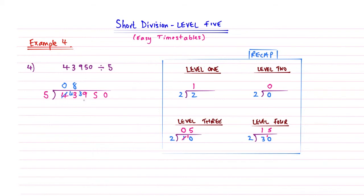Now 5s into 39. Well, 5 times 7 is 35. So it's going to be 7 times it goes in. Now there's a remainder of 4 there. Now 5s into 45 go 9 times, because 9 times 5 is 45. And then we've got a level 2 skill at the end. 5s into 0 go none. So my answer to 43,950 divided by 5 is 8,790. So that's example 4 done.